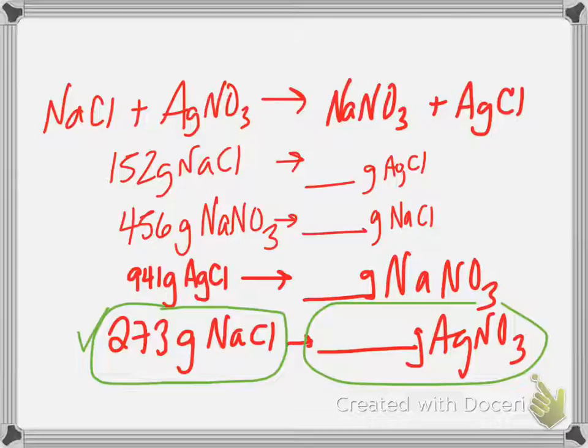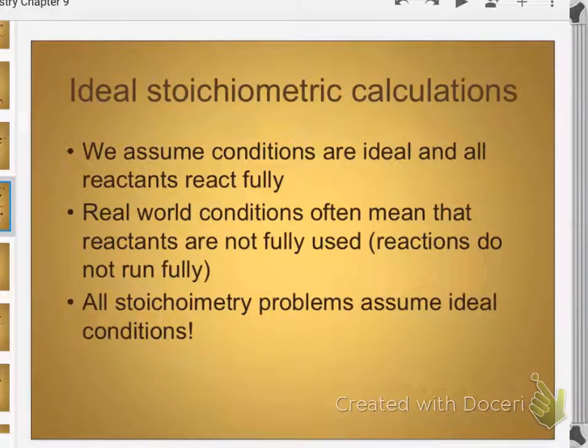Now we're going to step away from the math and go to the concept of limiting reagents. Let's first talk about this idea of an ideal world, a perfect world. When you're doing all these calculations, you're telling me if you give me 150 grams of sodium chloride, I can make you X number of grams of sodium nitrate. That's because we're assuming that everything goes perfectly, that the reaction runs completely.